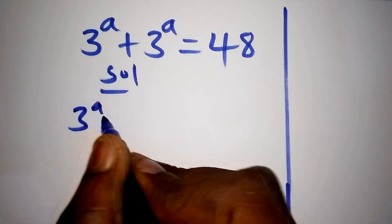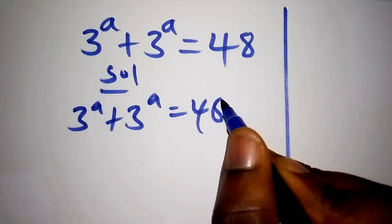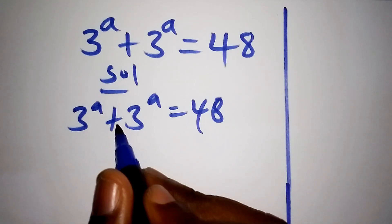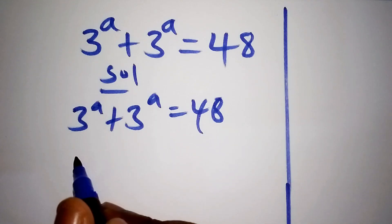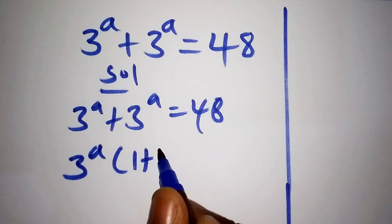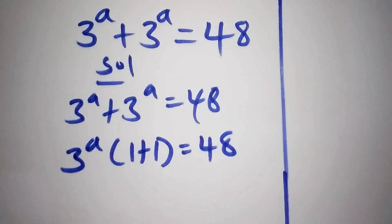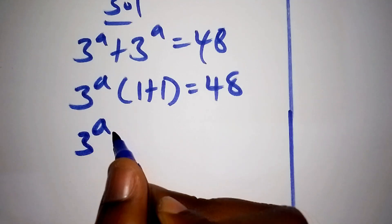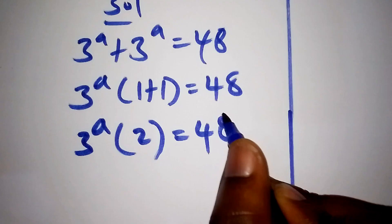So 3 to the power of a plus 3 to the power of a is equals to 48. The first thing you need to do is factorize: 3 to the power of a plus 3 to the power of a can be written as 3 to the power of a into bracket 1 plus 1, which equals 48. So that gives us 3 to the power of a into 2, equals 48.